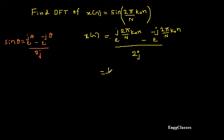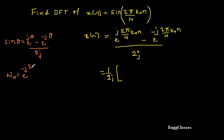I will write it as 1/(2j) times the bracket. Now, what is e^(j·2π/N)? For this I make use of the twiddle factor concept. The twiddle factor W_N is equal to e^(−j·2π/N). So this concept we already know.